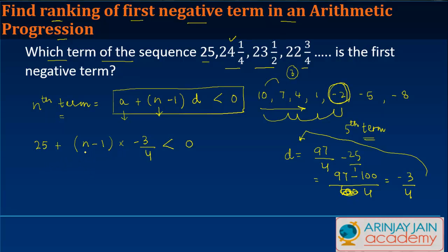Solving this for n: multiply by 4 to clear the fraction, giving us 100 + (n-1)(-3) < 0, which becomes 100 - 3n + 3 < 0.